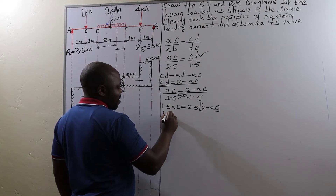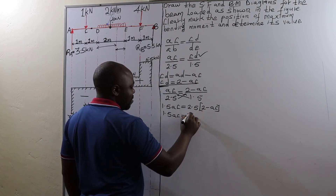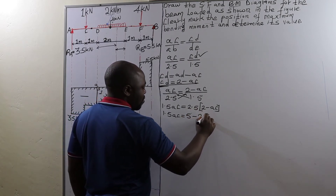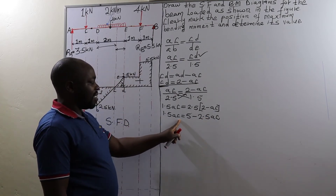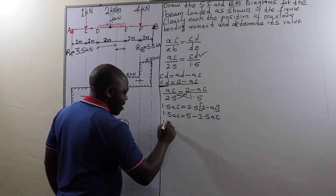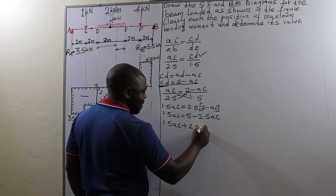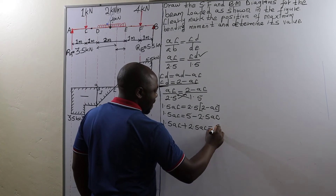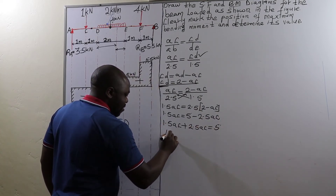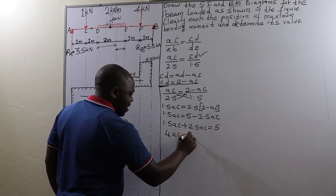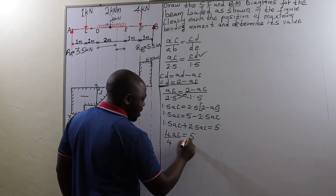This gives us 1.5 AC equals — opening the brackets — 2.5 times 2, that will be 5, minus 2.5 AC. Taking 2.5 AC to the other side of the equal sign gives 1.5 AC plus 2.5 AC equals 5. That is 4 AC equals 5. To get the value of AC, divide both sides by 4.